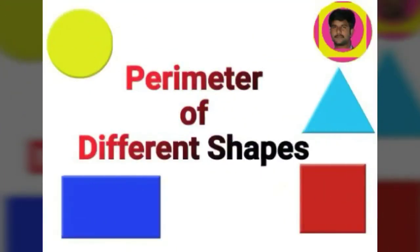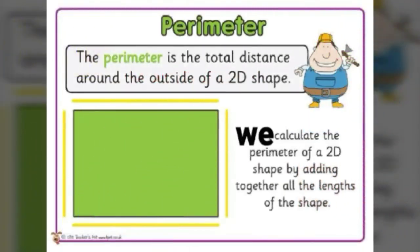Perimeter of Different Shapes. The perimeter is the total distance around the outside of a 2D shape. We calculate the perimeter of a 2D shape by adding together all the lengths of the shape.